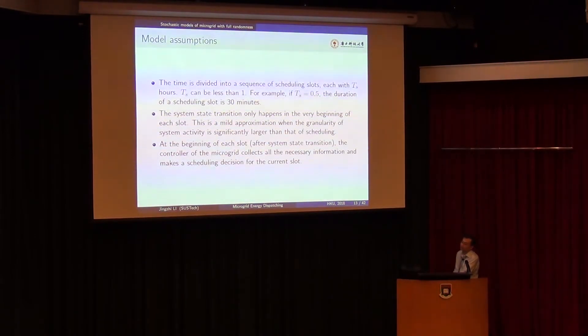Now let's make some model assumptions. The time is divided into a sequence of scheduling slots, time slots. For example, if you let one hour, then you will change a policy per hour. If let this TS to be a half, that means every 30 minutes, you will change your policies. And this system transition will be happens at the very beginning of each time slot. This is only a mathematical assumption. You can do it with a time buffer. And at the beginning of each time slot, this controller of this microgrid will collect all the information and then make a scheduling decision.